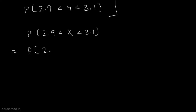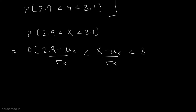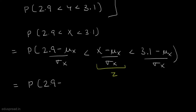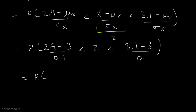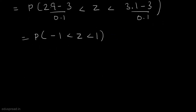To find P(2.9 < X < 3.1), since x is normally distributed, we can transform this into the standard normal. This equals the probability that (2.9 − mu x) / sigma x is less than z is less than (3.1 − mu x) / sigma x. Since z is a continuous random variable, we can use the proposition that P(a < X < b) = P(X ≤ b) − P(X ≤ a).